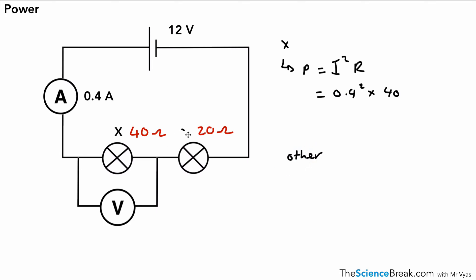And for the other one, let's call that one Y. So for Y, P is I squared R again. And this time, we have 0.4 squared times 20. And if we bang those into our calculator, we get 6.4 for the first one, and 3.2 for the second one. Less power in the second lamp, so it would be not as bright as the first one. It wouldn't be as bright as X.